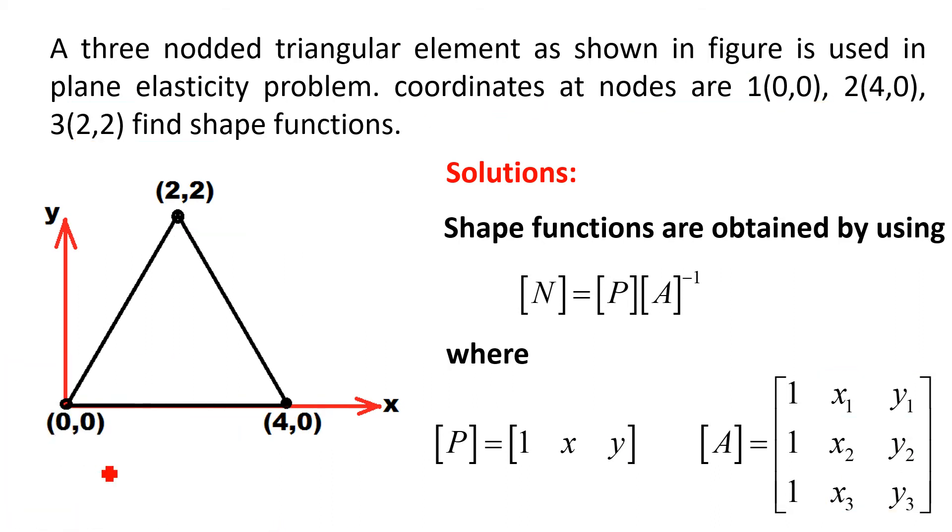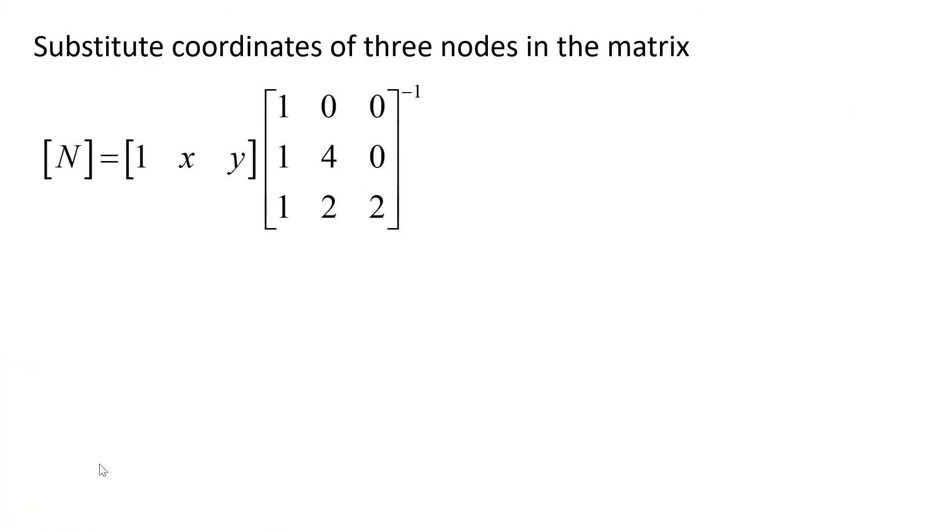If we substitute these values in connectivity matrix, we will get the matrix like: 1, 0, 0; 1, 4, 0; and 1, 2, 2. Now, we have to find out inverse of that. It is a 3 by 3 matrix. To determine the inverse, the simplest method is method of adjoin.